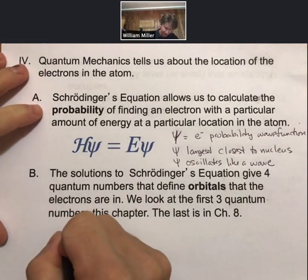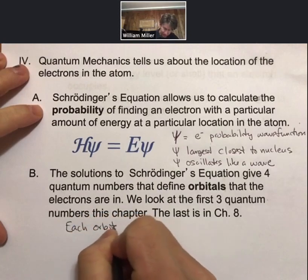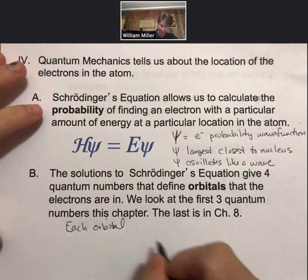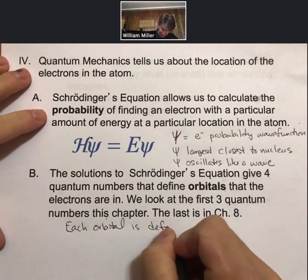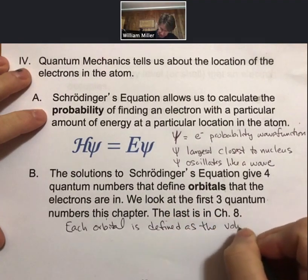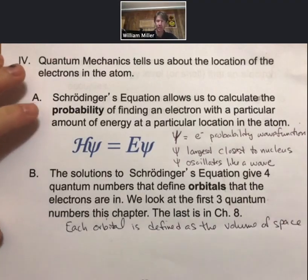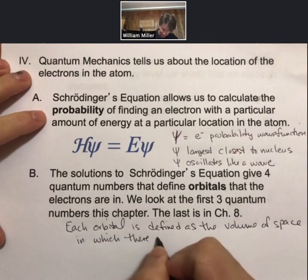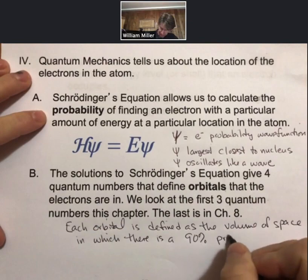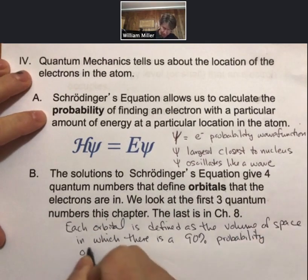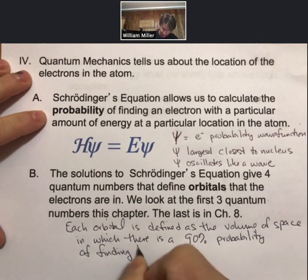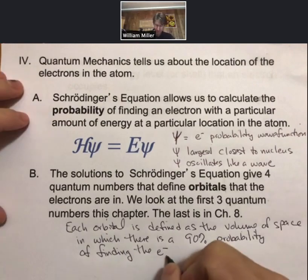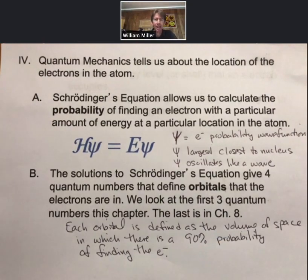And what I'll note here is that each orbital is defined as the volume of space in which there is a 90% probability of finding the electron. That is the definition of an orbital, and we will see that the shapes are pretty varied, but that is always the definition of the orbital.